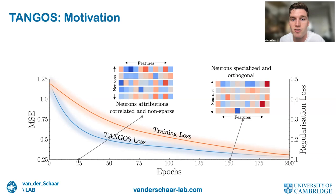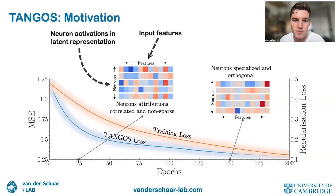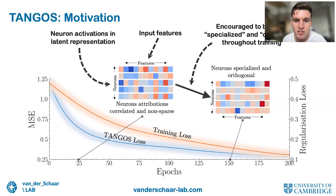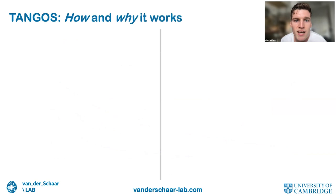In recent years there's been an explosion of work applying deep learning to tabular data. These methods aim to improve performance over baselines or leverage benefits of representation learning including multimodal learning, meta-learning, semi-supervised learning, and interpretability. In this work we propose a general-purpose regularizer — like weight decay or dropout — that induces an inductive bias well suited to tabular settings. Specifically, we consider the relationship between neuron activations in the latent representation and the input features.